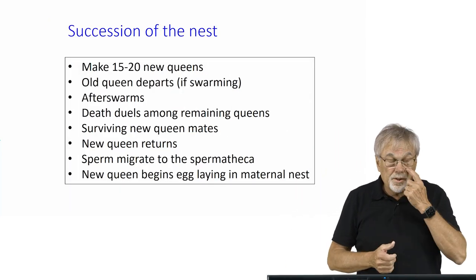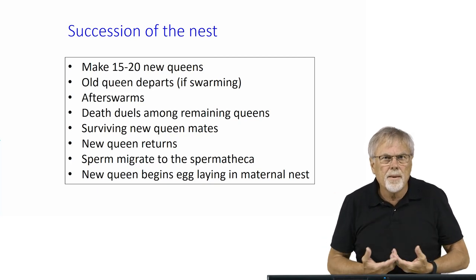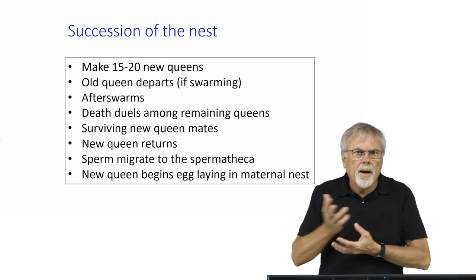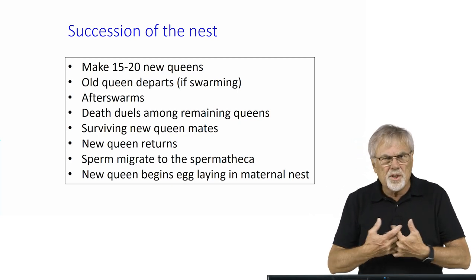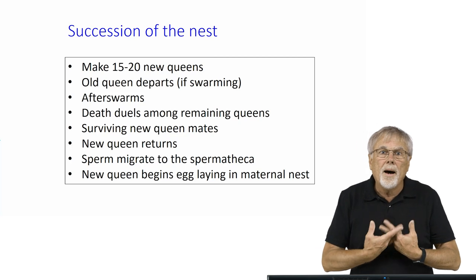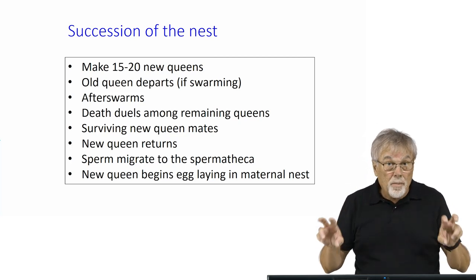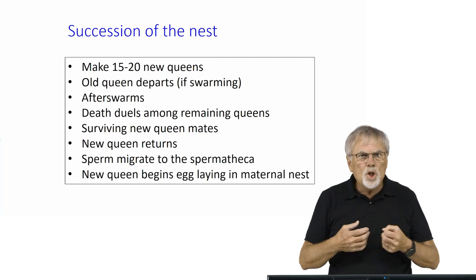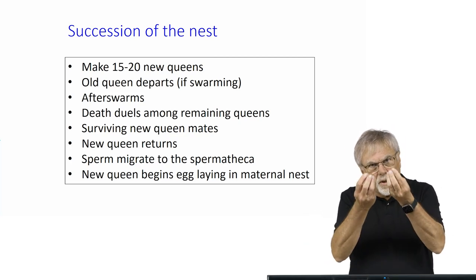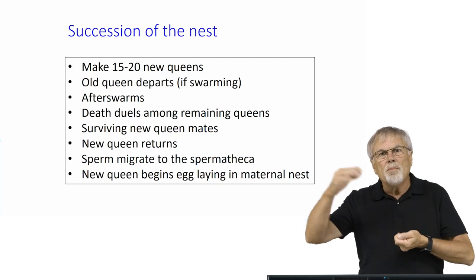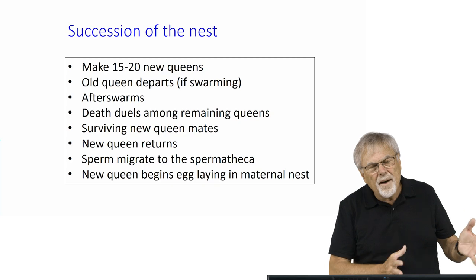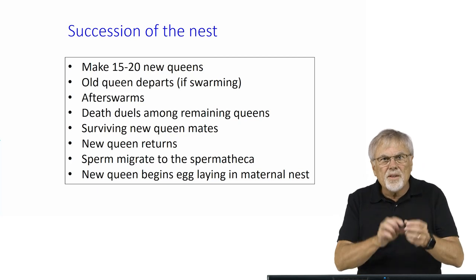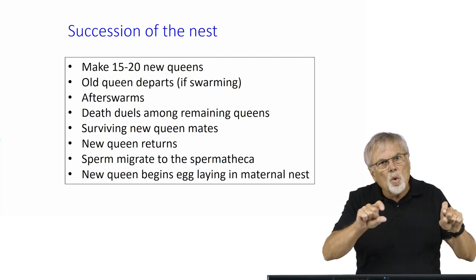The succession of a nest is an important event in the life history of a colony. This is the time when the queens change — a queen is replaced by her daughter. They happen under special circumstances. But when there's a succession during swarming, when colonies reproduce, a colony will typically make between 15 and 20 new queens. These queens are raised in special queen cells. The old queen will then depart — if it's a swarm, she'll depart and about half the bees of the colony will go with her. They'll leave behind about half the bees with these developing queen cells that contain the new queens that have been produced.